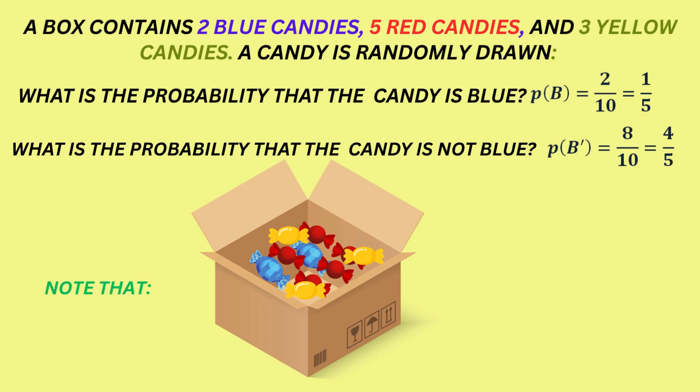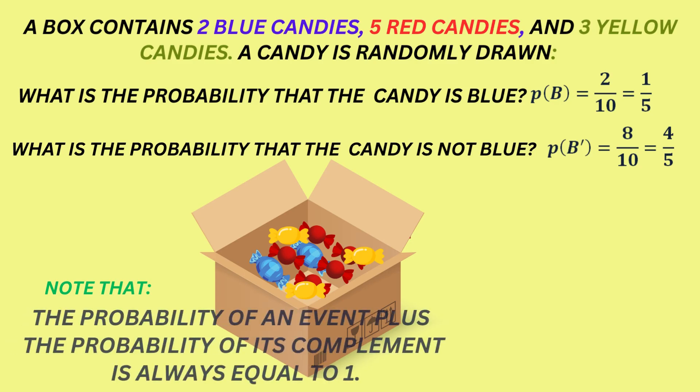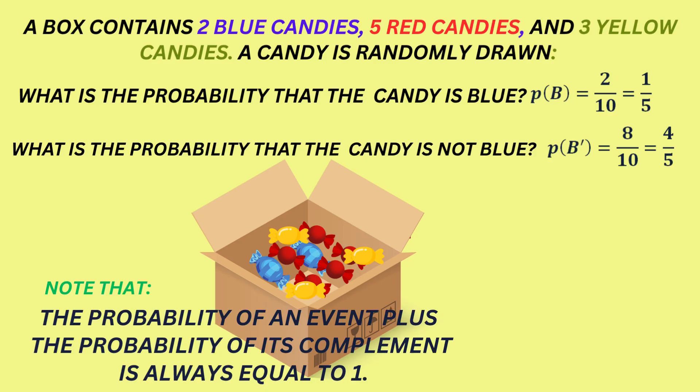Notice again that the probability of B plus probability of B complement is 1. So, you could have found the probability of B complement by simply subtracting 1 fifth from 1 to get the 4 fifths.